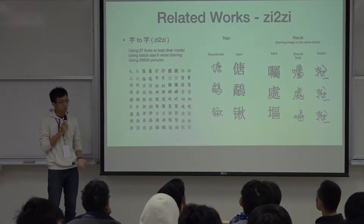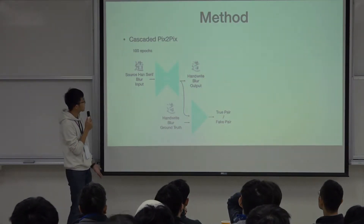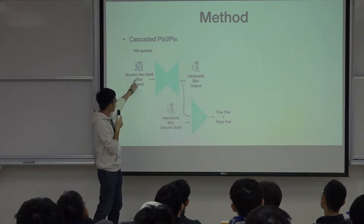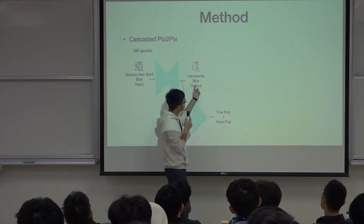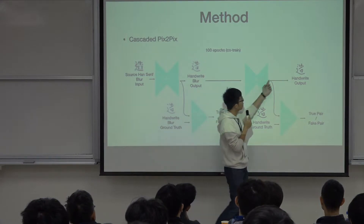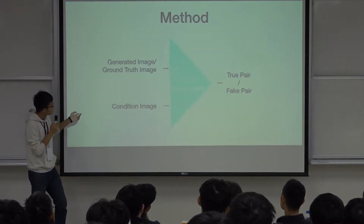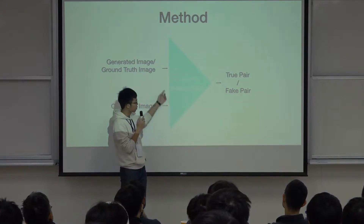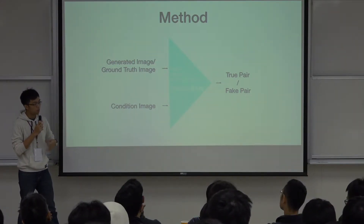So we came up with a solution to solve the position problem: Cascade Pixel-to-Pixel. We use the first pixel-to-pixel to input the blurred Source Hand series and output a blurred handwritten font. Then we input that into the second pixel-to-pixel and improve it to the final output we want. We also modified the discriminator by adding structural normalization on each layer, which constrains the discriminator function and improves the full training process.